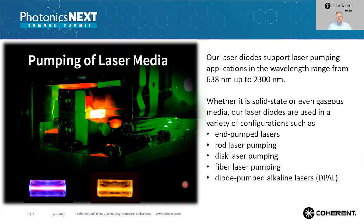Let me start with an overview of the pump wavelengths we offer. Essentially from 640 nanometers in the visible red up to above two microns, we have a variety of pump wavelengths available. For example, 640 nanometers for chromium-doped crystals like Chrome LiSAF, we cover 793, 808, 880, 950, 940, 976, but also go beyond that — 1532 nanometers for erbium-doped crystals or 1908 for thulium-doped materials. We also have wavelengths at 766, 780, or 852 nanometers which can be used to pump alkali gases for so-called DPAL lasers.